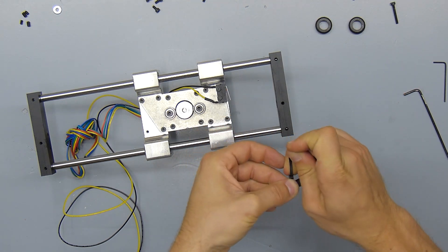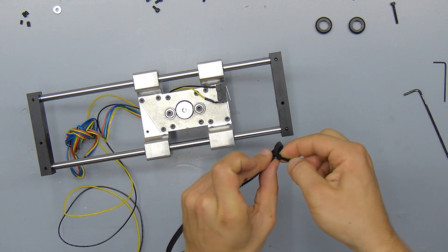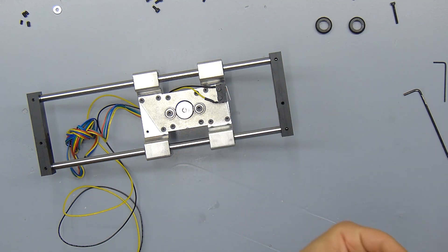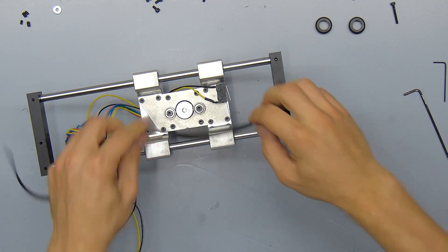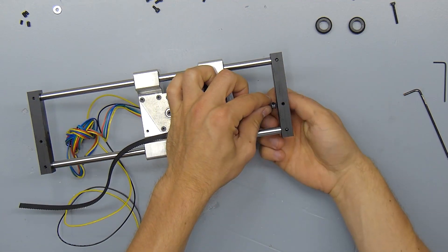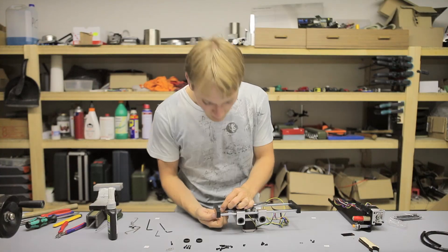Then zip tie the belt into a loop, and just like on the x-axis, try not to smash the belt and get the zip tie as tight as possible. Then insert the zip tie into the center hole and lock it into place with the 10mm M3 screw.